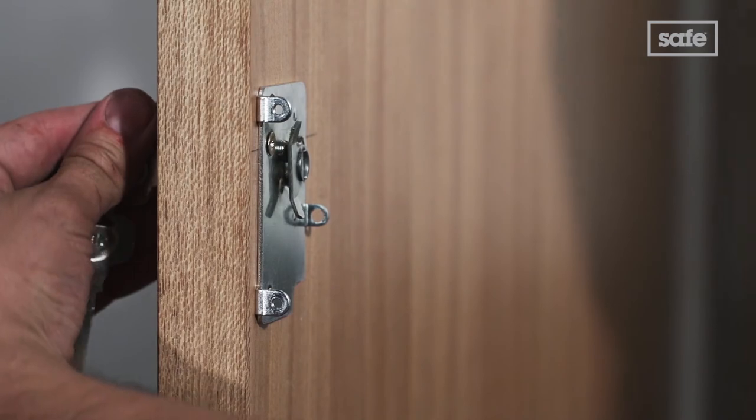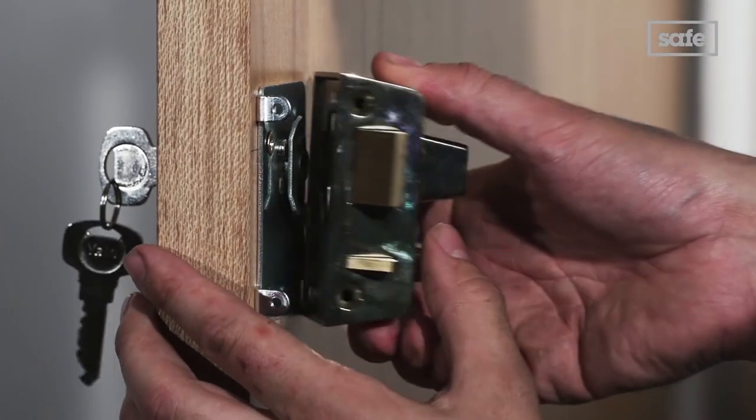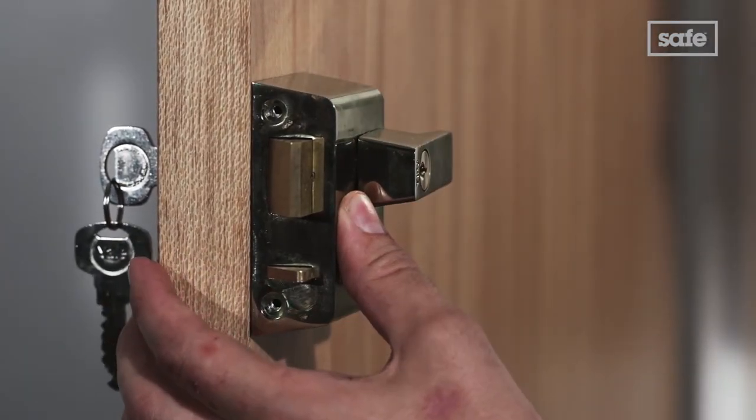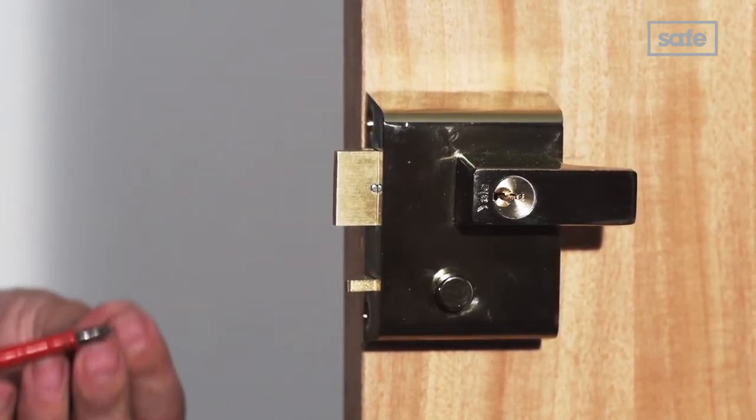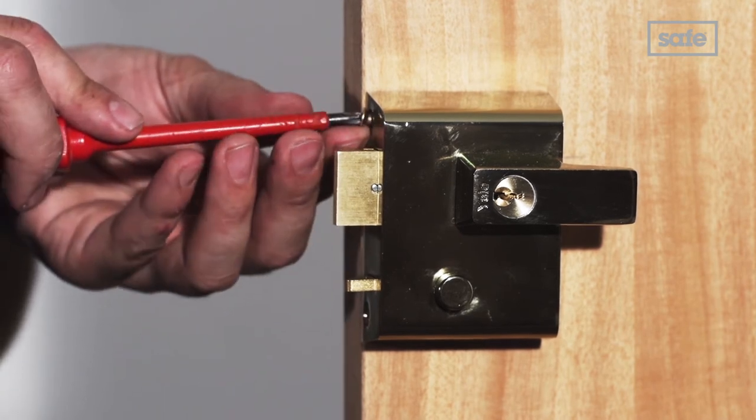Now you can place the lock case over the mounting plate, ensuring that it sits flush with the edge of the door. Secure the lock case to the mounting plate using the two screws provided.